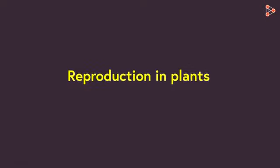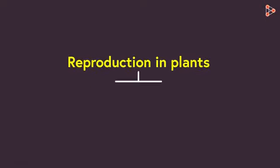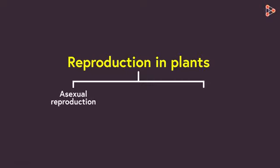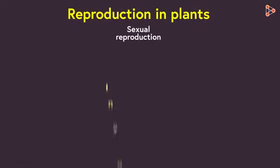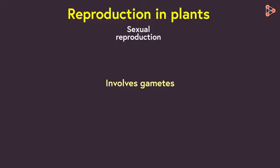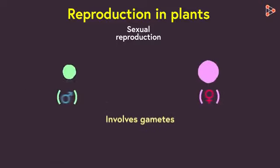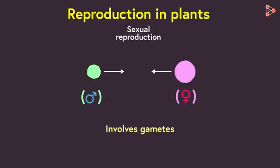Reproduction in plants can occur in two major ways. One type is asexual reproduction and the second is sexual reproduction. Sexual reproduction, as the name suggests, involves sex cells or gametes. So a new individual is born when gametes from both male and female parents fuse.